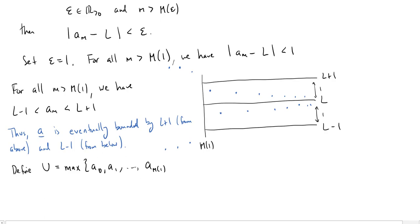These are all of the places where we don't know what the value is. It's only past m of 1 that we know things are between L plus 1 and L minus 1. And then let's toss in L plus 1.